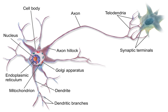Synapses can be excitatory or inhibitory, either increasing or decreasing activity in the target neuron. Some neurons also communicate via electrical synapses, which are direct, electrically conductive junctions between cells. When an action potential reaches the axon terminal, it opens voltage-gated calcium channels, allowing calcium ions to enter the terminal. Calcium causes synaptic vesicles filled with neurotransmitter molecules to fuse with the membrane, releasing their contents into the synaptic cleft. The neurotransmitters diffuse across the synaptic cleft and activate receptors on the postsynaptic neuron.